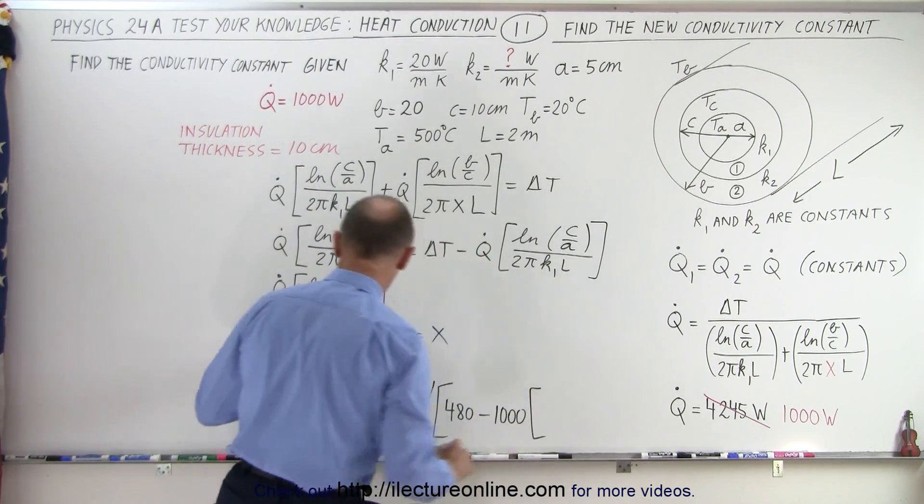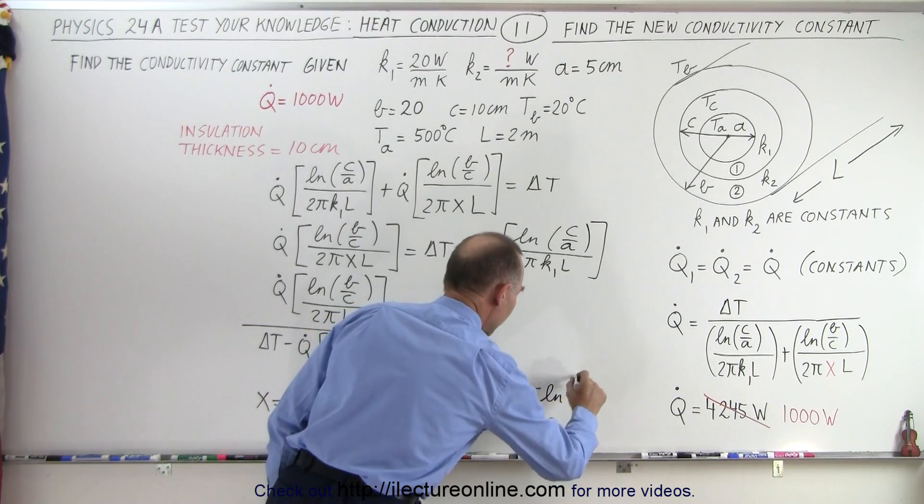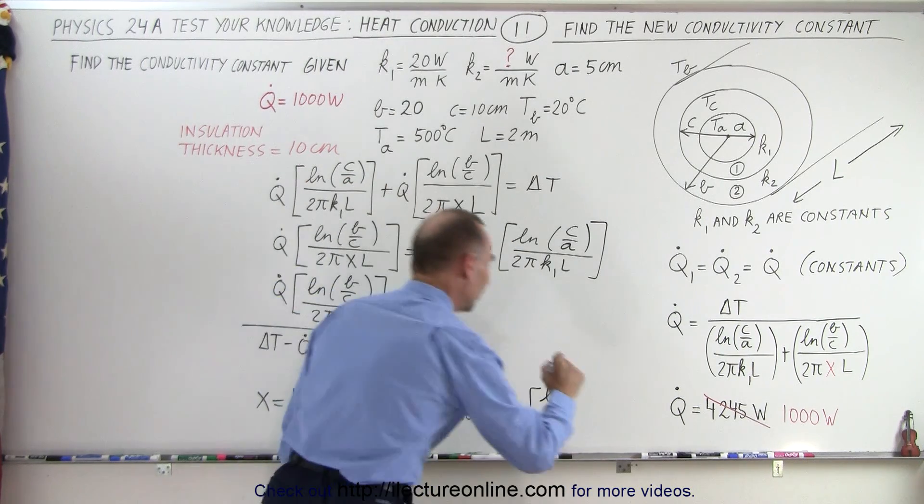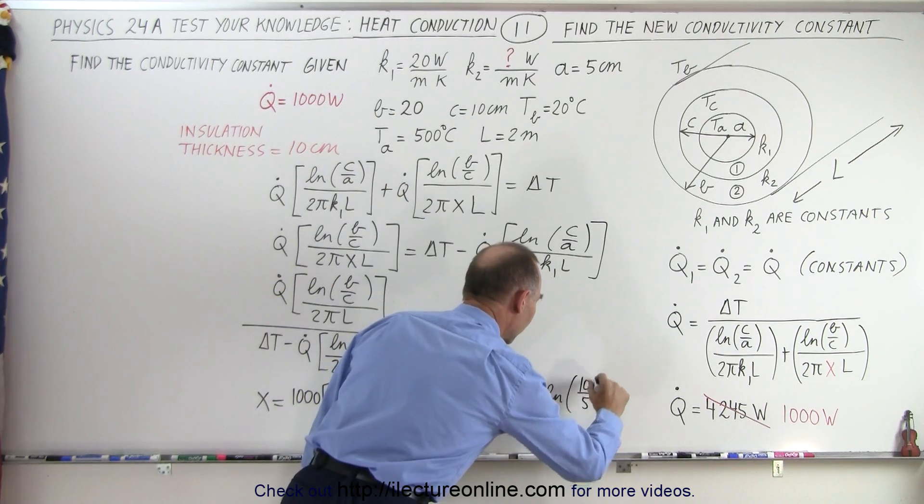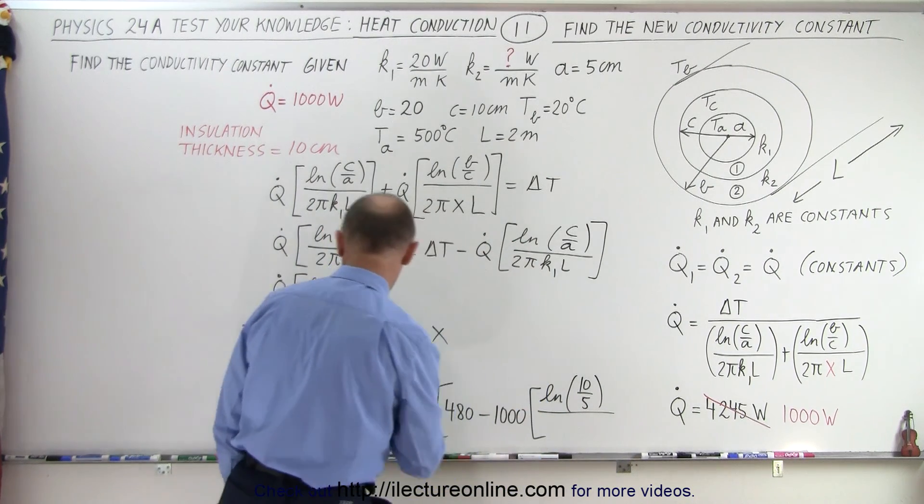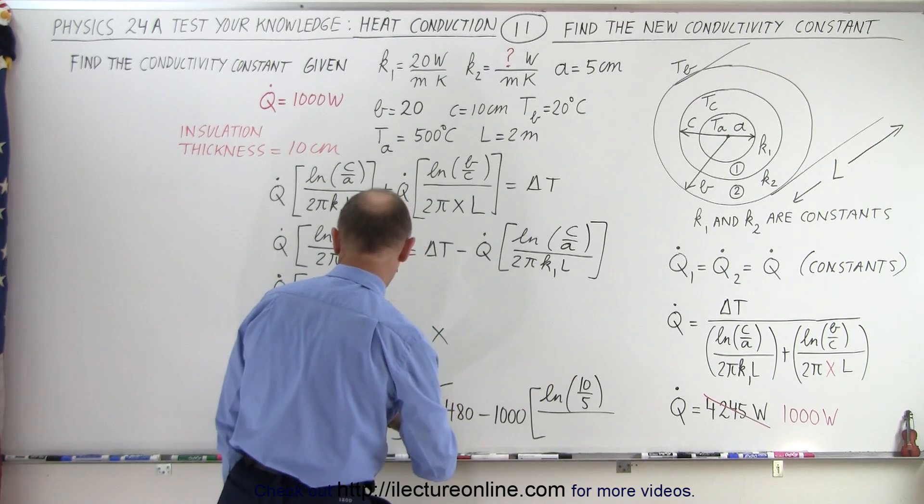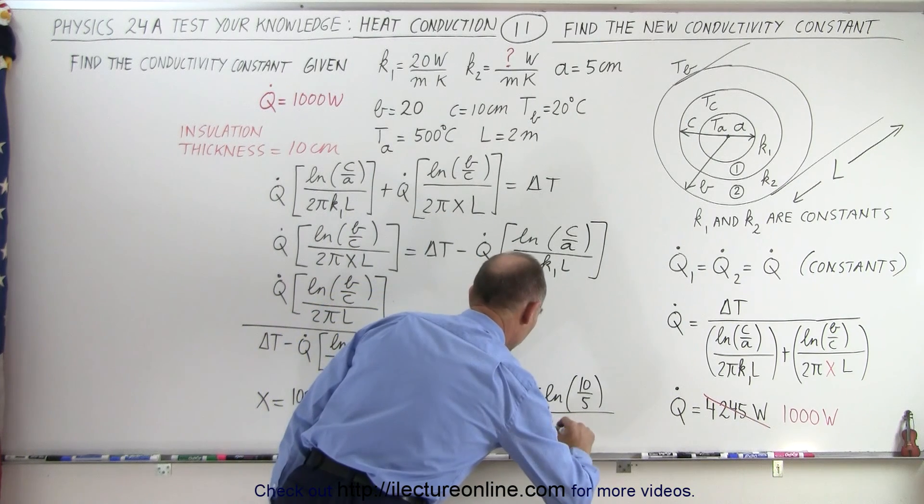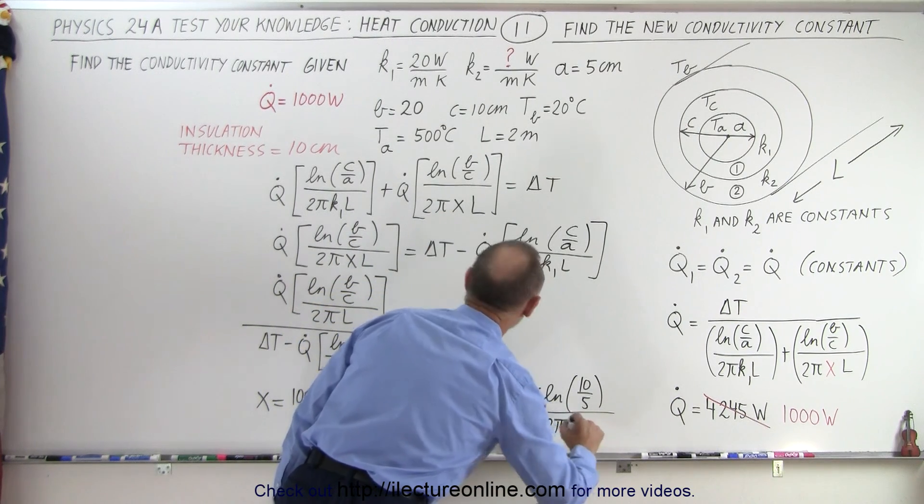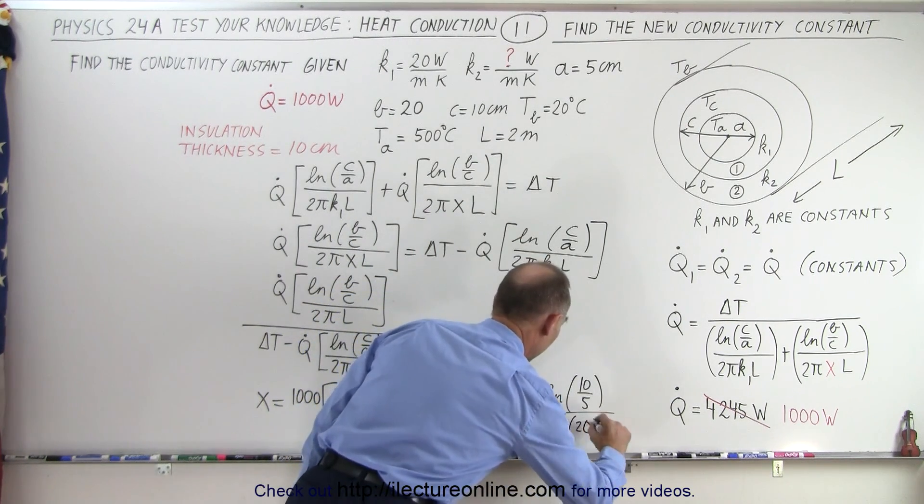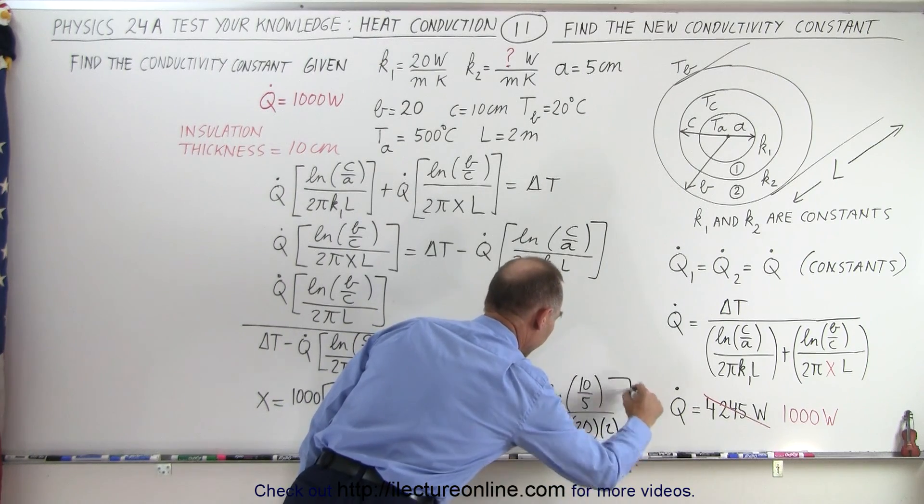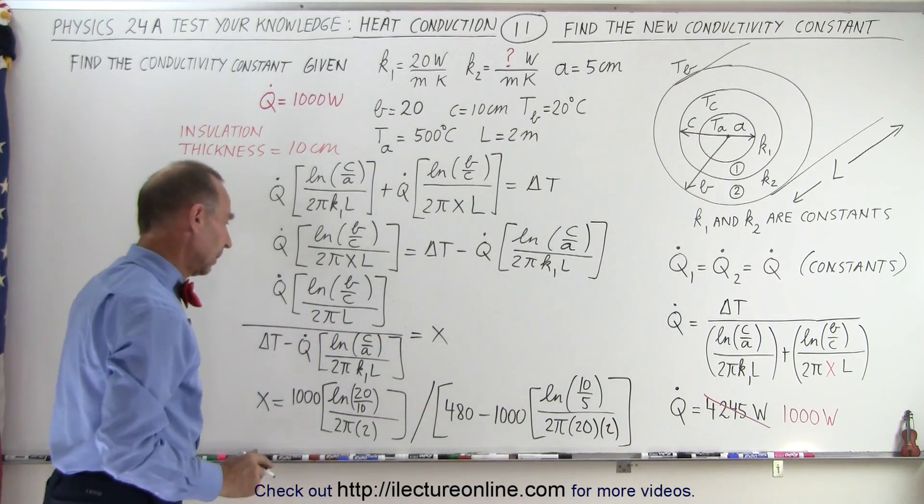Times the natural log of C over A. C is 10 over A, which is 5, divided by 2 pi, see here, 2 pi K1. So 2 pi K1 is 20, yes, and L is 2.